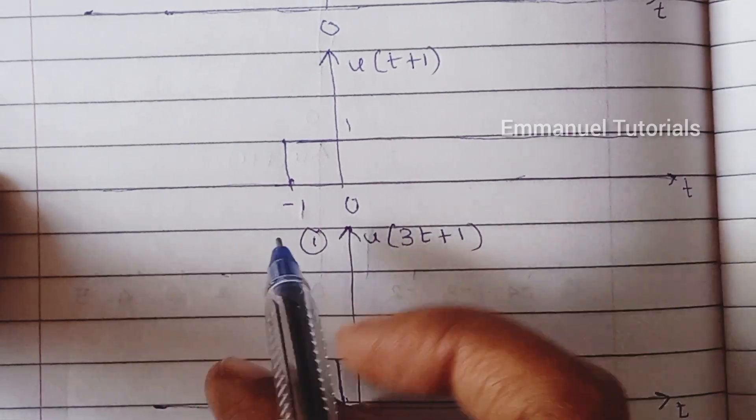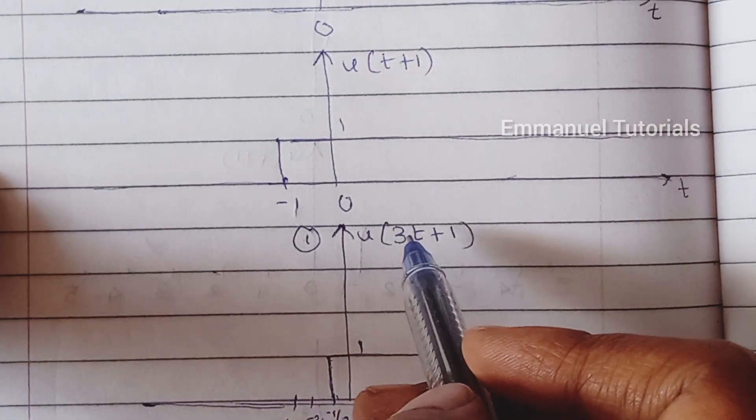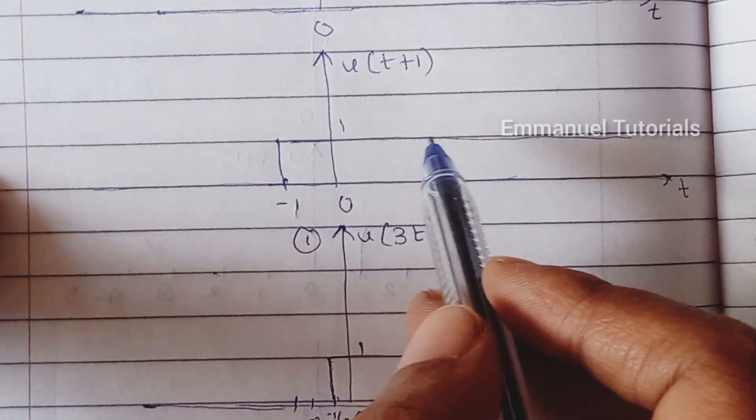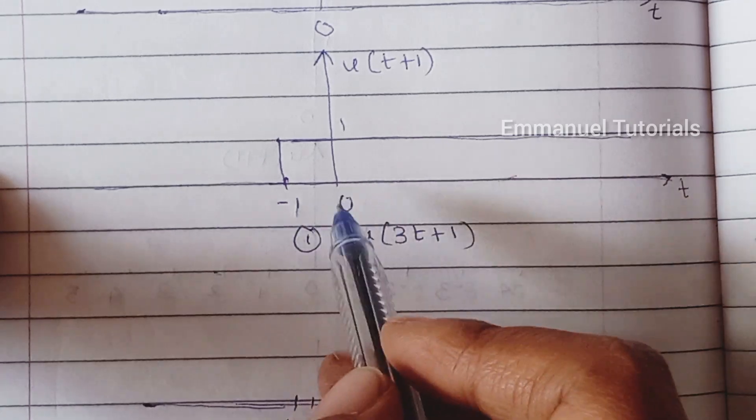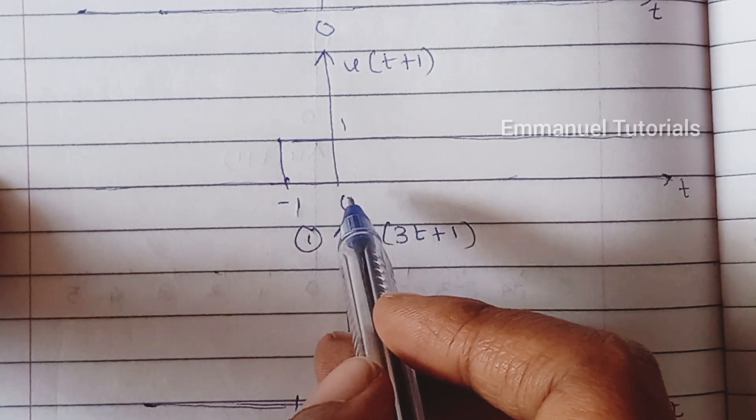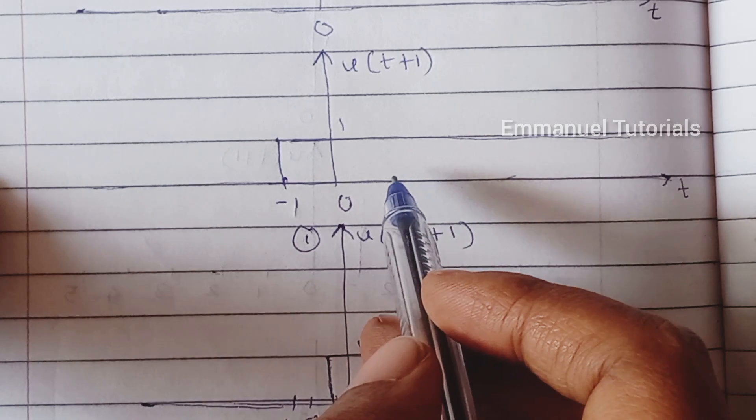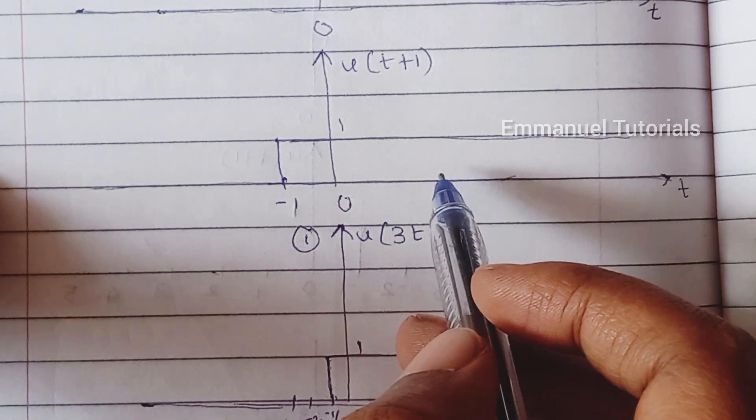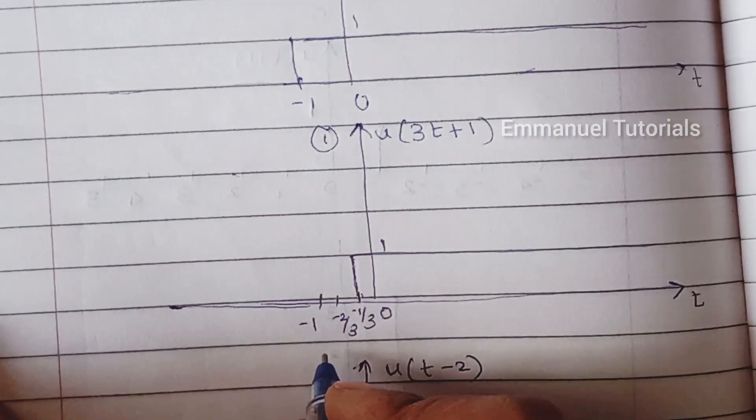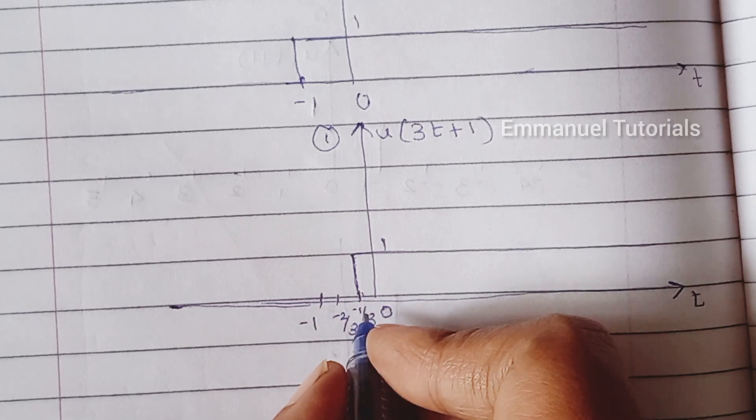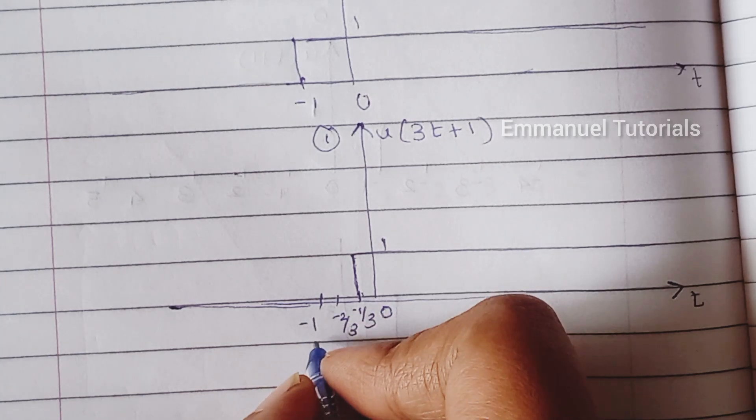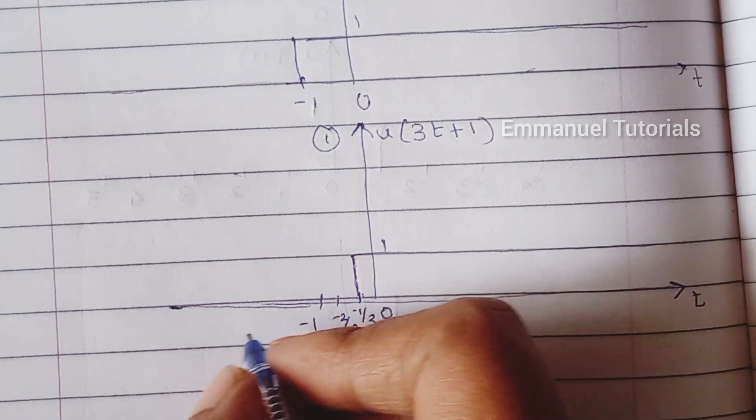So u of t plus 1 starts from minus 1, but if we are going to get 3t so it's going to be divided by 3. So the time axis needs to be divided by 3. That is whatever signal appears at minus 1 will appear at minus 1 by 3, what appears at 0 will appear at 0 by 3, what appears at 1 will appear at 1 by 3, what appears at 2 will appear at 2 by 3. So similarly what I have done is in between minus 1 I have put down the points that is minus 1 by 3, minus 2 by 3, then minus 3 by 3 is minus 1, similarly minus 4 by 3 and so on.